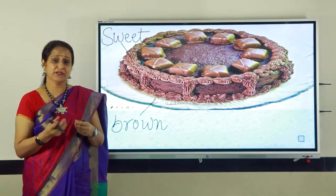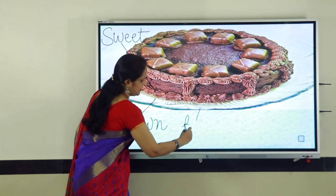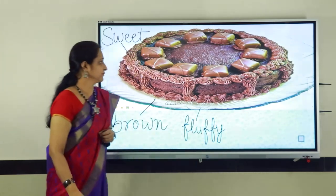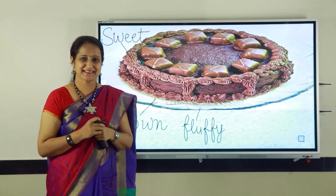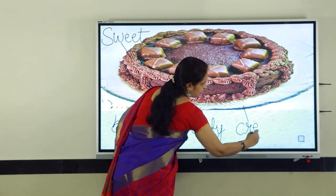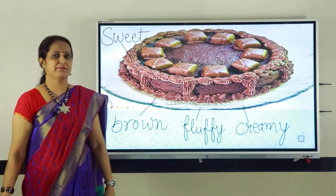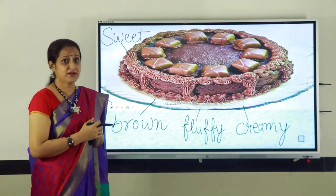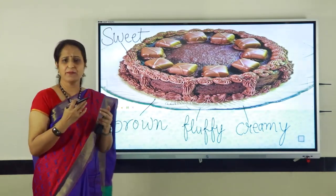Can you tell me the feel of the cake? Yes, it is fluffy. The cake is fluffy. Can you tell something more about the taste of the cake? Yes, the describing word is creamy. You can also use many more describing words for the given picture of cake. You can say it's delicious, you can say it's chocolatey, you can say it's spongy and much more.